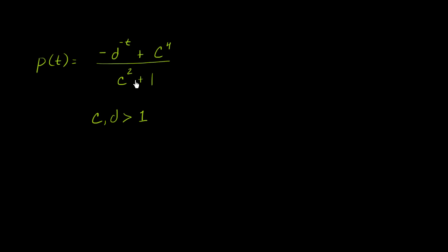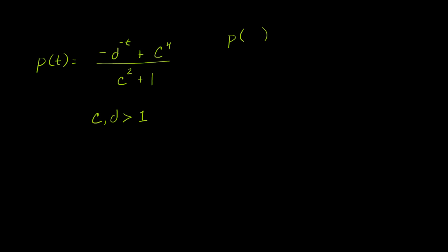The first thing I want you to think about is: what is the initial position? If I were to express the initial position in terms of c's and d's and try to simplify it. I encourage you to pause the video and try to find an expression for the initial position. Well, the initial position is the position when time is equal to 0, so we essentially just want to find p of 0.